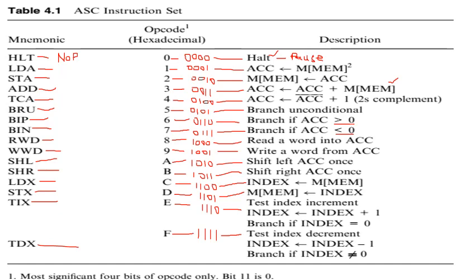The next instruction is TCA — Two's Complement of the Accumulator — with opcode 4 and binary representation 0100. In its description, the data of the accumulator will be complemented and then one will be added to that complemented data, giving the two's complement of the accumulator's data.